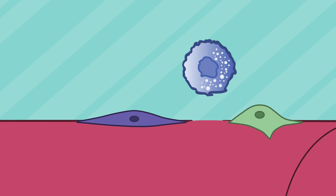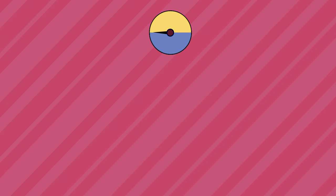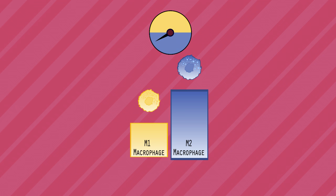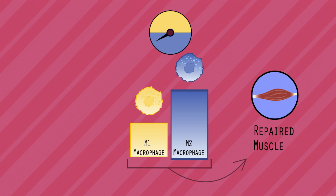The satellite cells then rebuild the damaged muscle fiber. However, muscle regeneration depends on the timely change of M1 to M2 macrophages. With the correct switch between M1 to M2 macrophages, the tissue will repair itself efficiently.